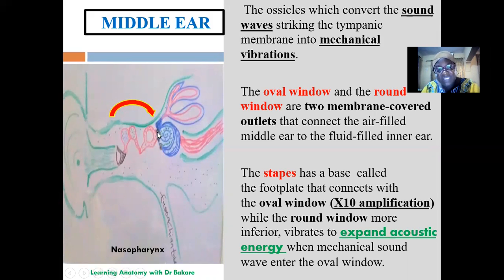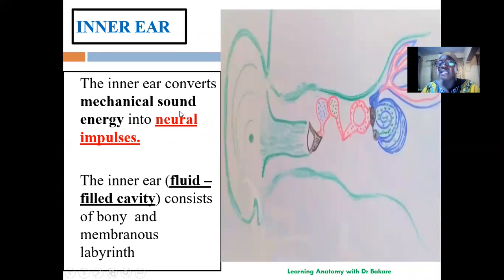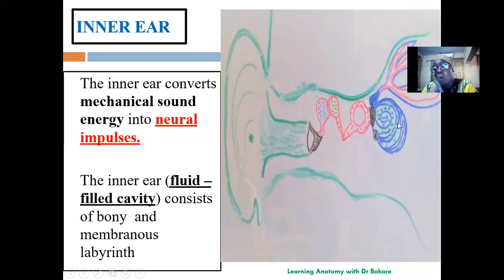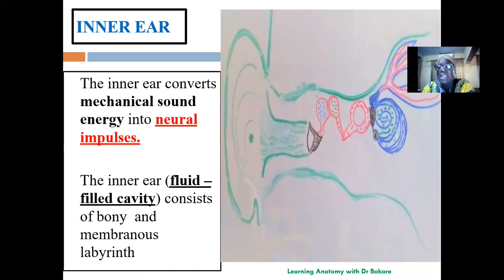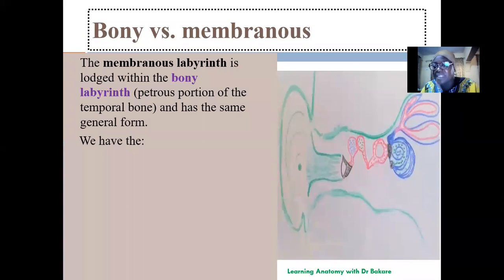The inner ear is a fluid-filled cavity, unlike the middle ear where the space is filled with air. The major event in the inner ear is the conversion of mechanical sound wave — generated in the middle ear — into neural impulses, which is what the brain understands. From the inner ear, the next target is the central auditory pathway going to the brain. Within the inner ear we have the bony labyrinth and the membranous labyrinth.